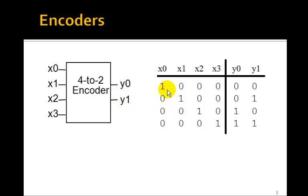So the idea is that only one of the inputs can be 1, either x0, x1, x2, or x3. That's the rule. And the binary output encodes which one it is. So if x2 is a 1, then the output is a 2. If x3 is a 1, the output is 3.